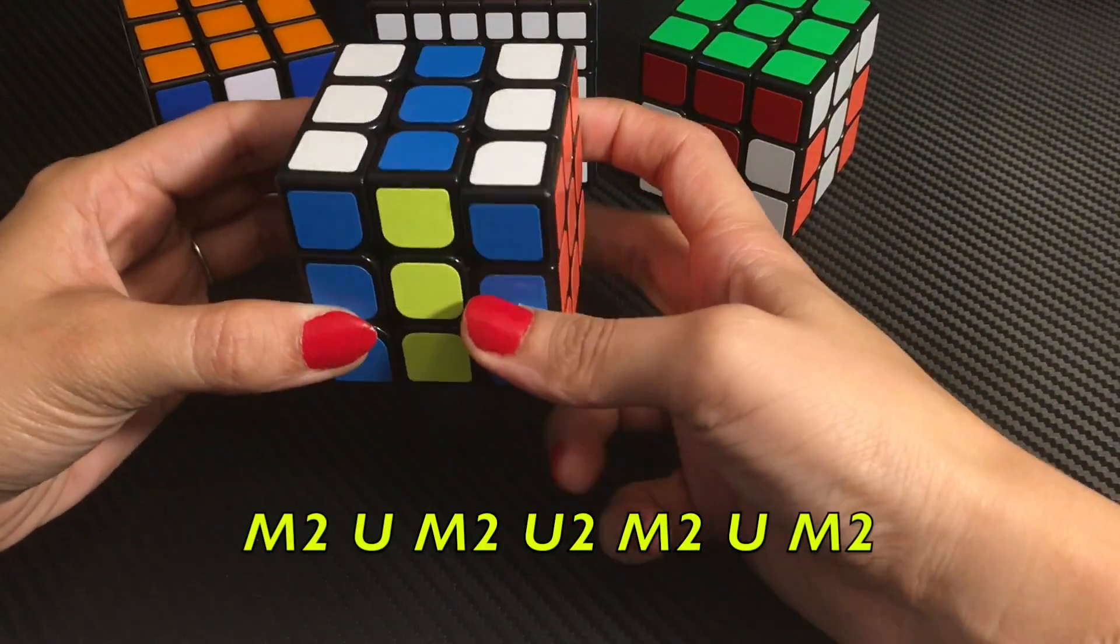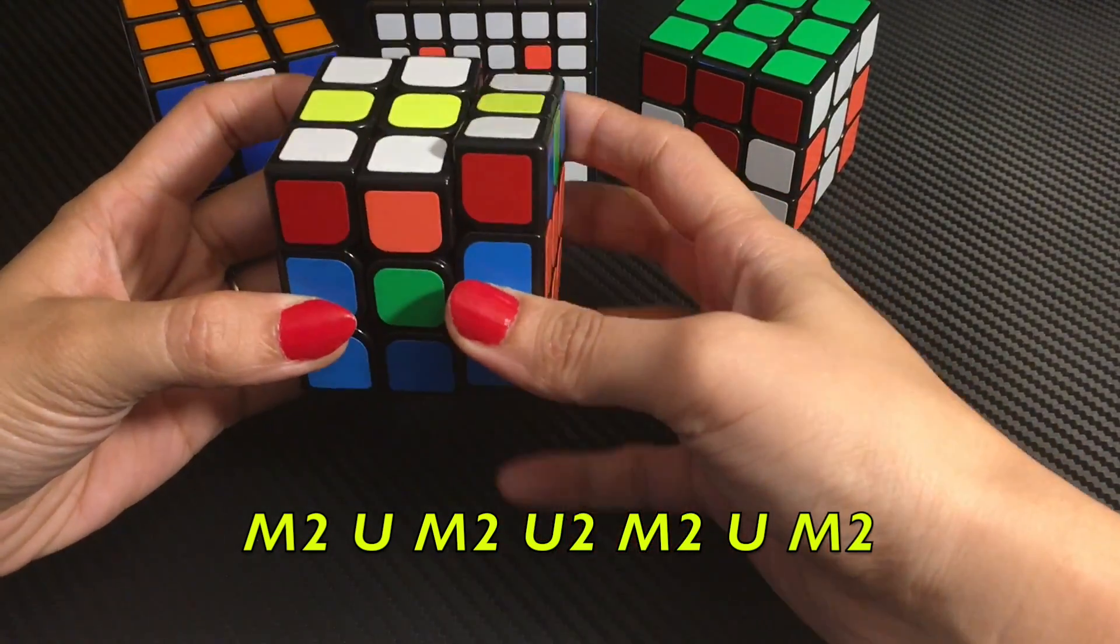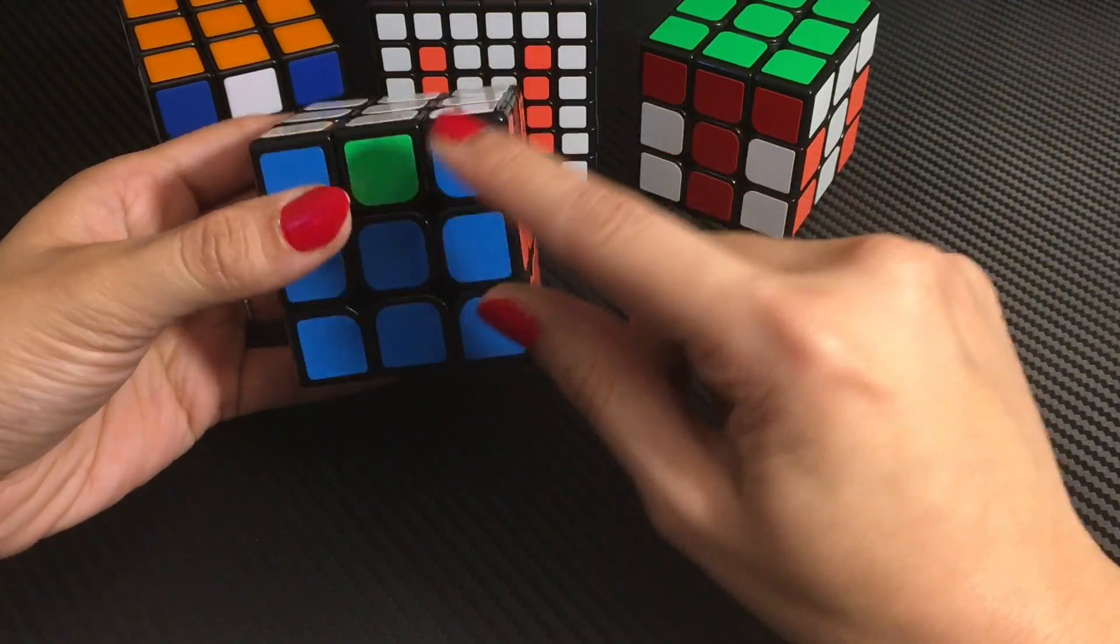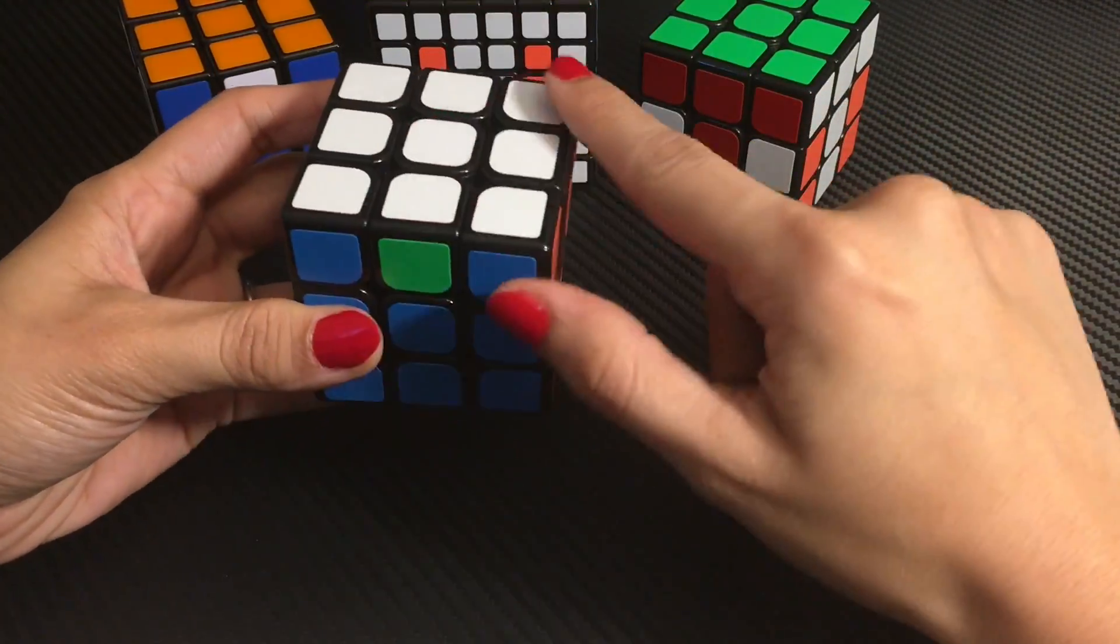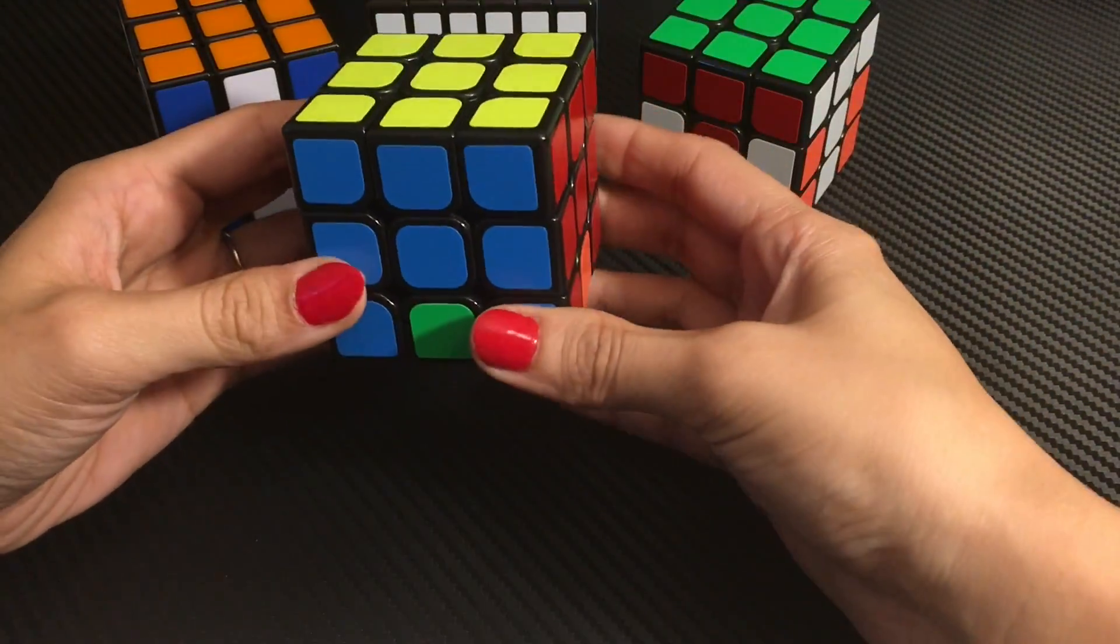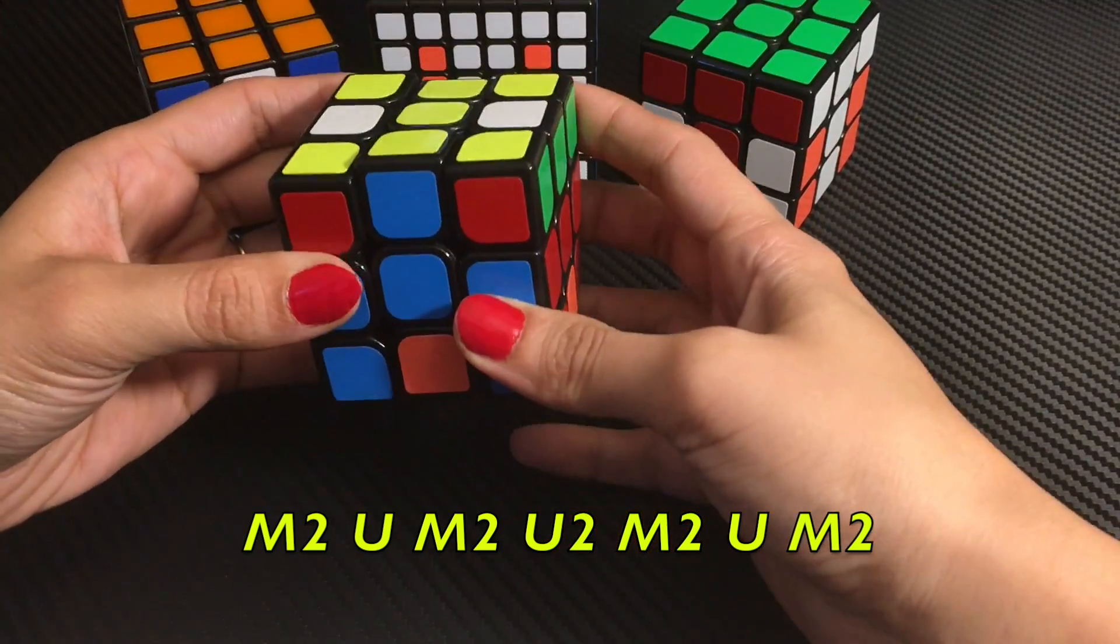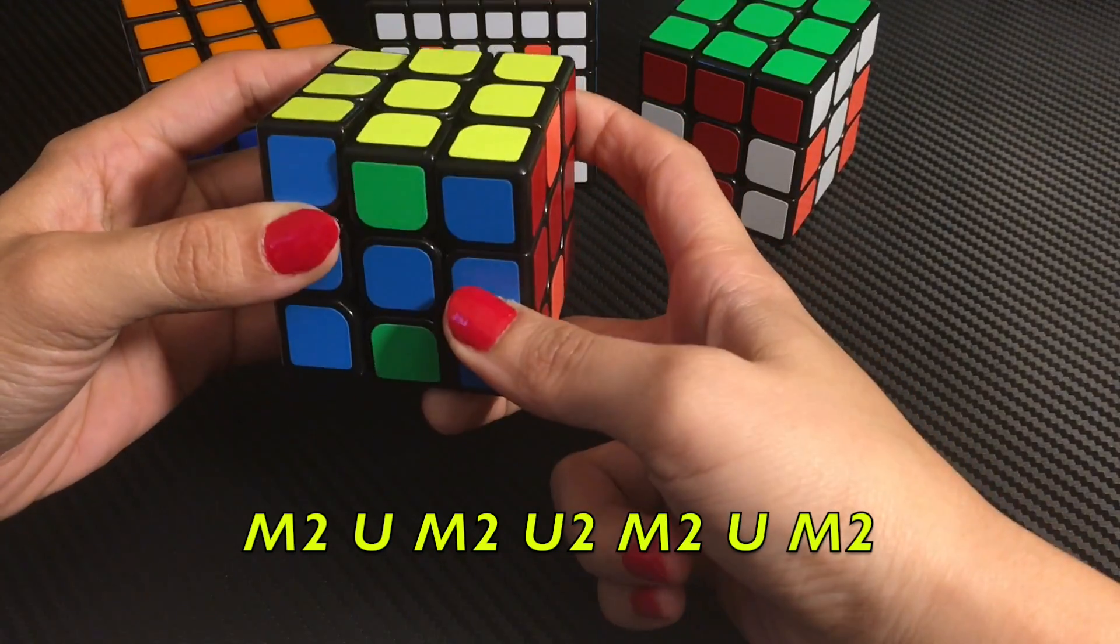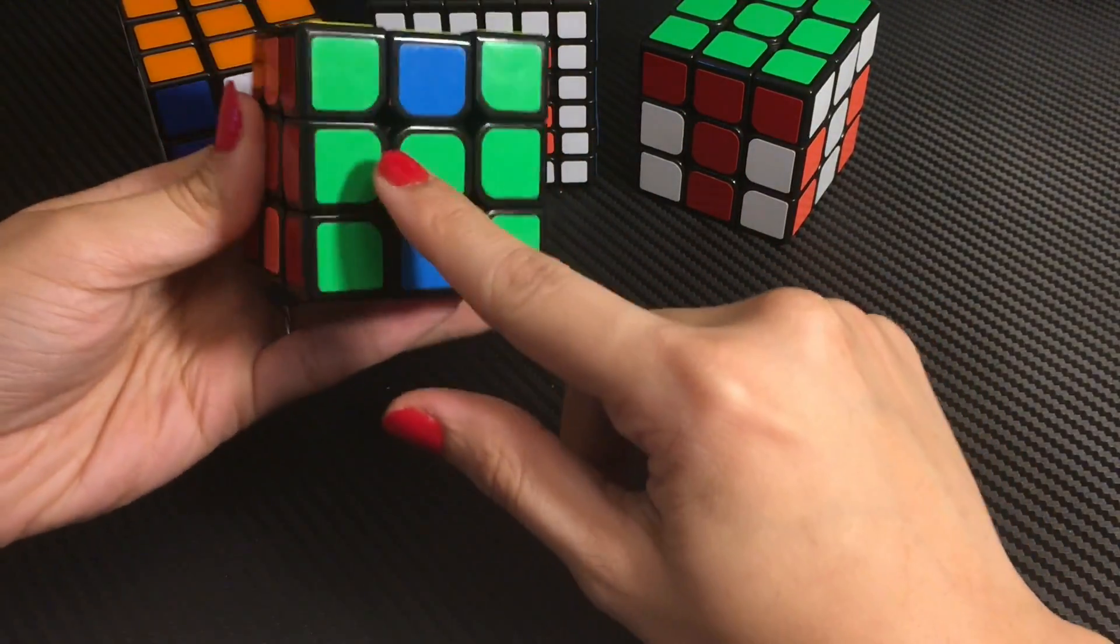M2, U, M2, U2, M2, U and last time M2. So, this will do our edges. And when we change the edges in the top layer, we will take it to the down layer and we will take the same algorithm again. So, M2, U, M2, U2, M2, U and last time M2. And this will become H. See?